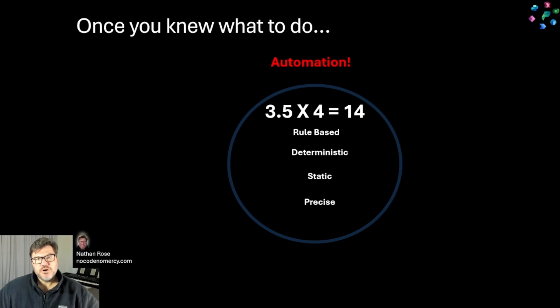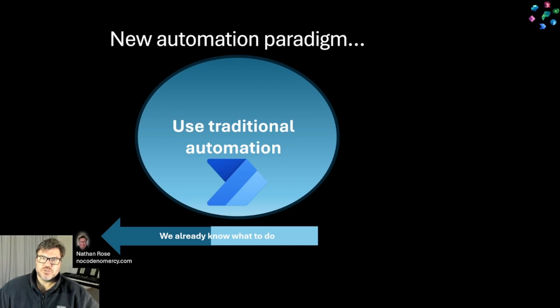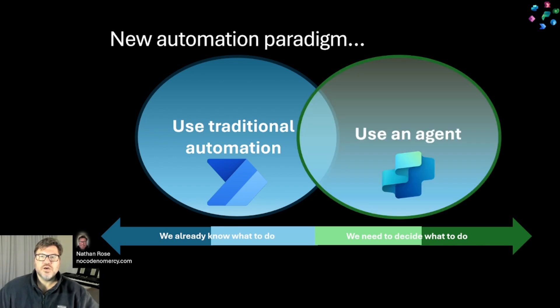And so this informs a new paradigm for how automation and AI agents can be combined together. When you already know what to do, that's the world of traditional automation. When you need to decide what to do, that's the world of an agent.